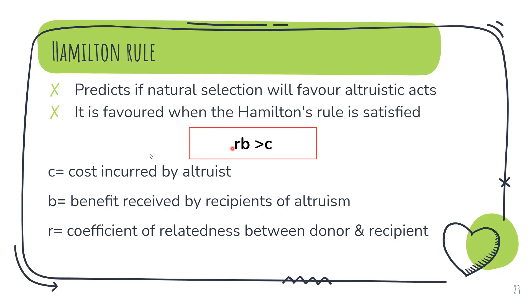The Hamilton rule states that an altruistic act will be favored by natural selection when r × b is greater than c. Here, r is the coefficient of relatedness between the donor (the one performing the altruistic act) and the recipient (the one benefiting). b is the benefit received by the recipient, and c is the cost incurred by the altruist.